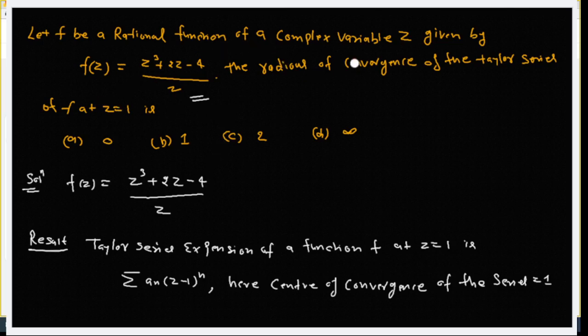Let f be a rational function of a complex variable z given by f(z) = (z² + z - 1)/z. The rational function is written in p upon q form, where p(z) upon q(z) represents the rational function. What will be the radius of convergence?